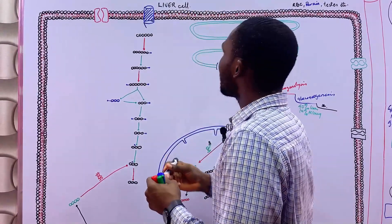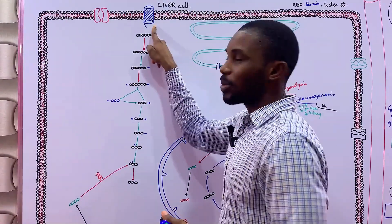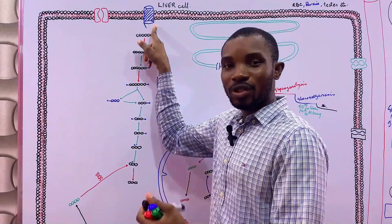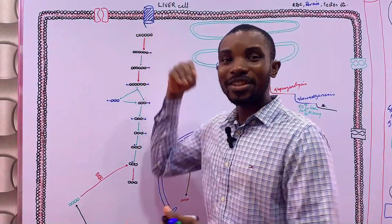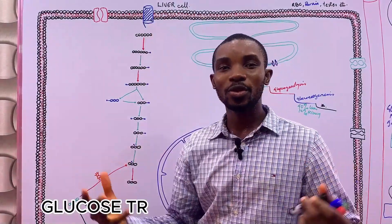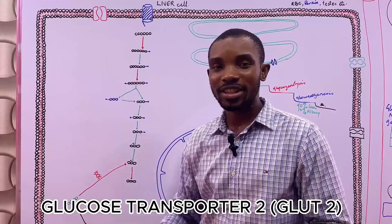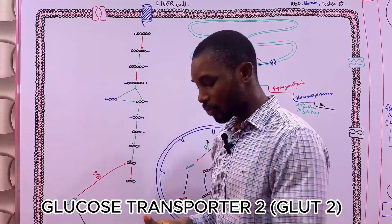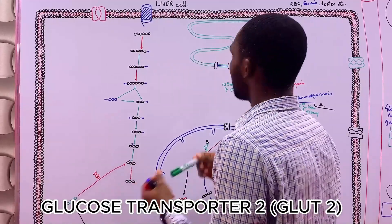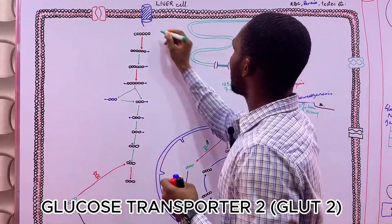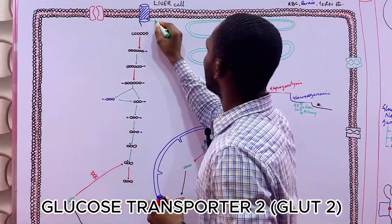In the liver cell, the glucose transporter present is GLUT2, as we discussed in the video on glycolysis — I'll put the link in the description below.